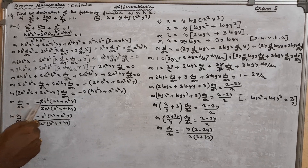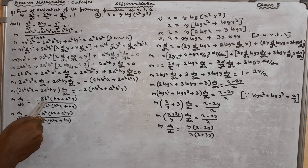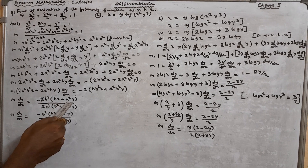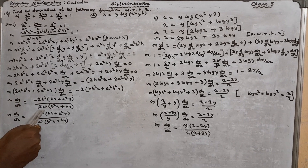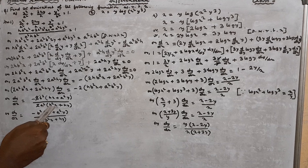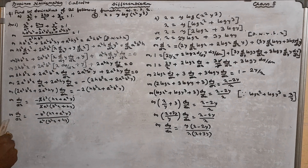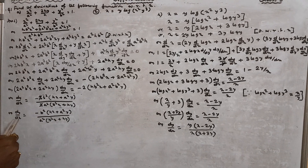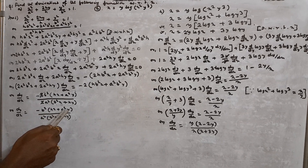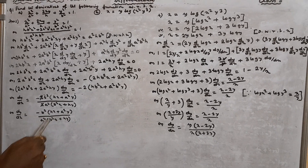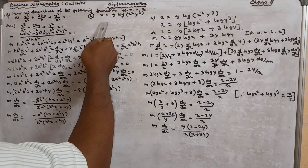So dY/dX = −2(HB²X + A²B²Y) / (2A²B²X + 2A²HY). Taking B² common in numerator and 2A² common in denominator, and cancelling 2: dY/dX = −B²(HX + A²Y) / A²(B²X + HY). This is the answer to the first question.